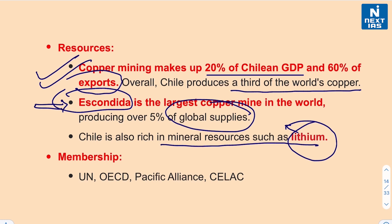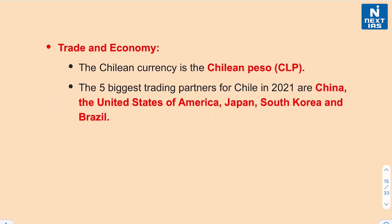Chile is a member of the Organisation for Economic Co-operation and Development (OECD), the Pacific Alliance, and also CELAC — the Community of Latin American and Caribbean States. The Chilean currency is the Chilean Peso. The five biggest trading partners of Chile as of 2021 are China, the United States of America, Japan, South Korea, and Brazil.